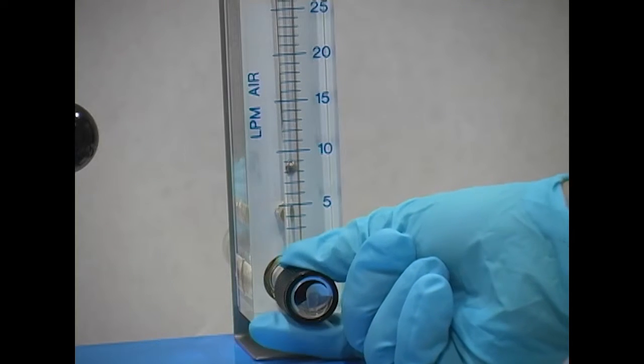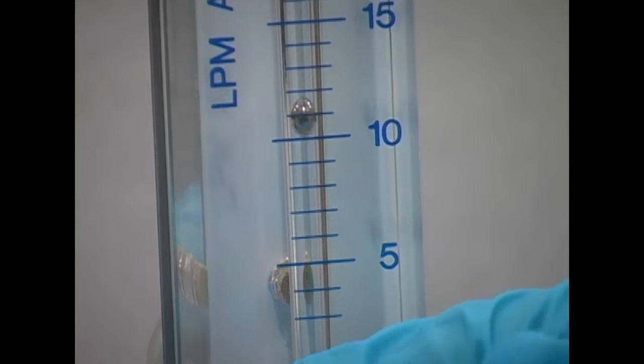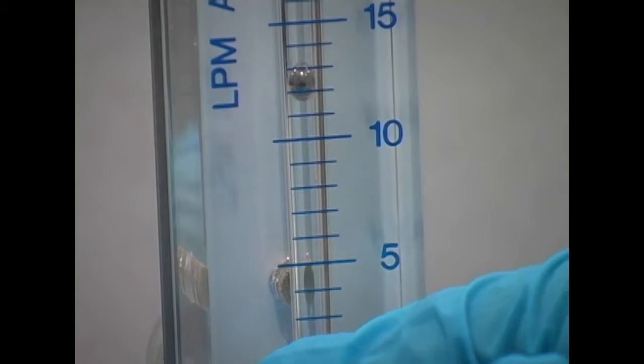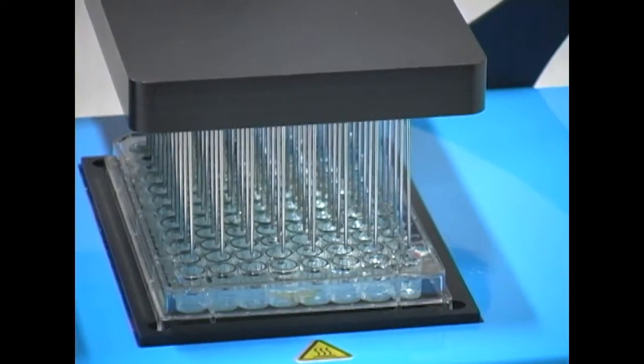The flow meter allows the user to easily adjust the flow of nitrogen entering the system. The user can choose between using one or all three of the manifolds with the flip of a switch.